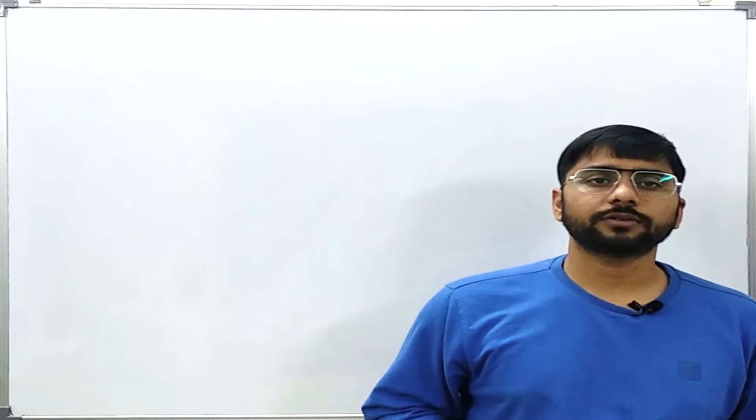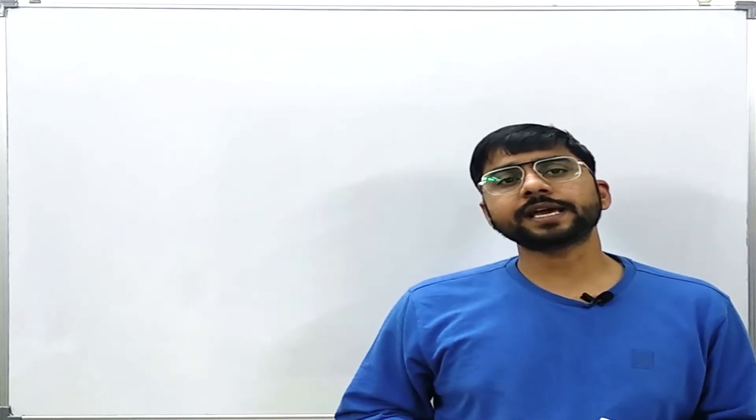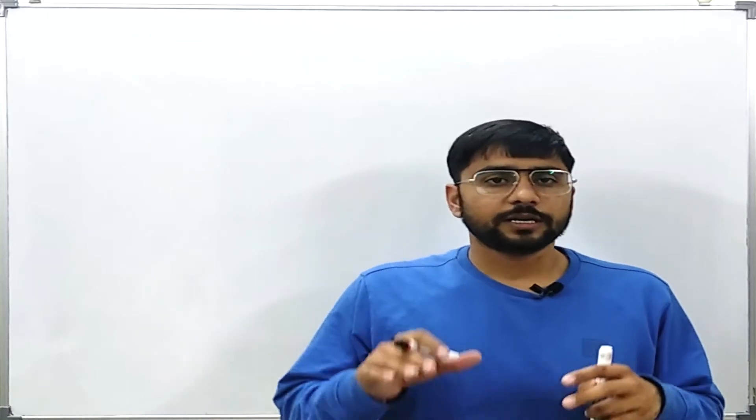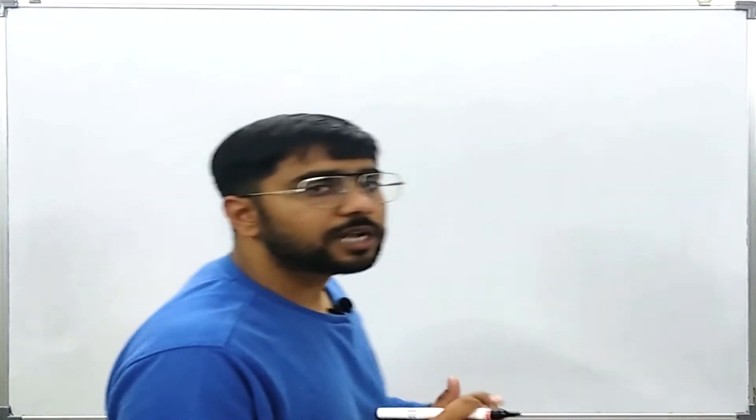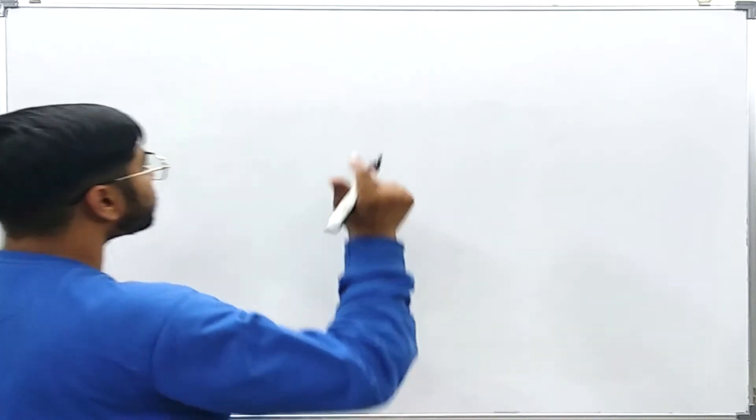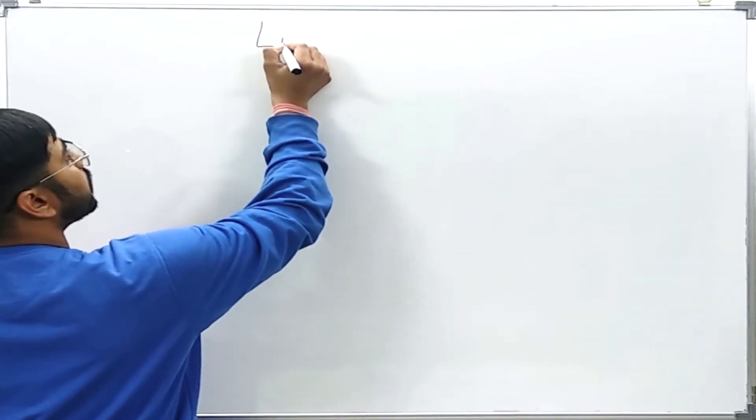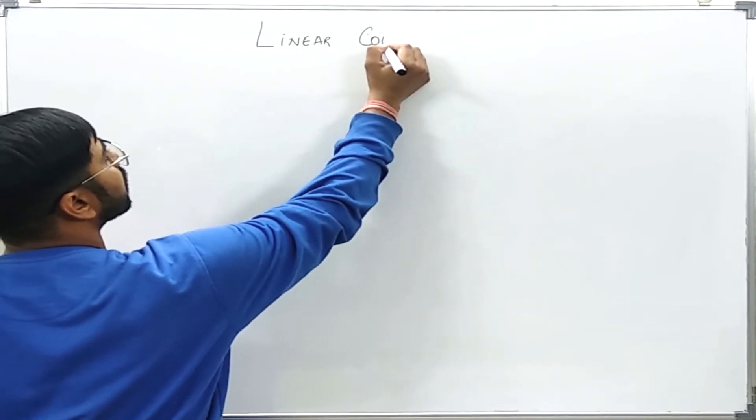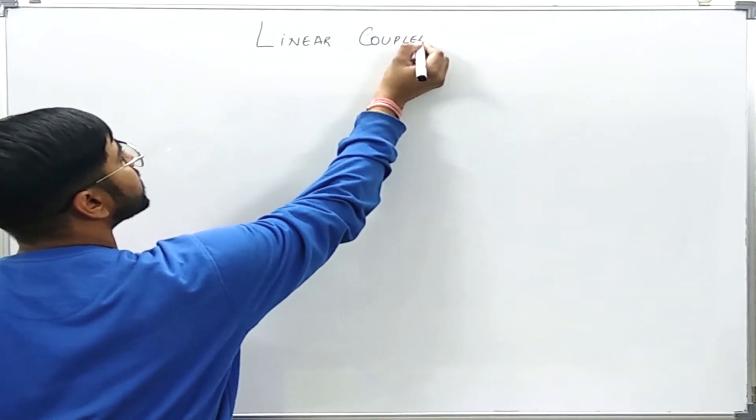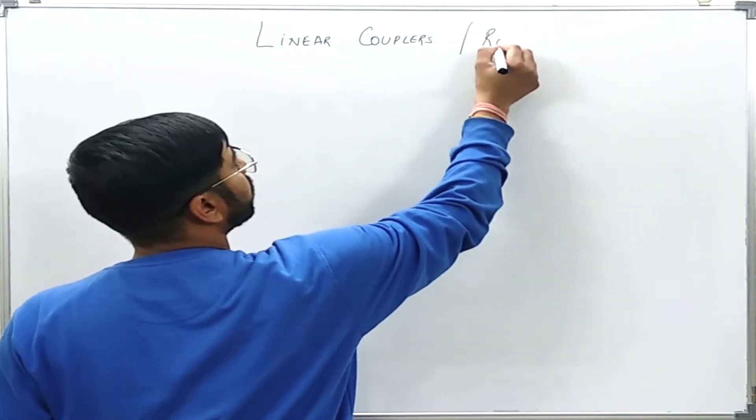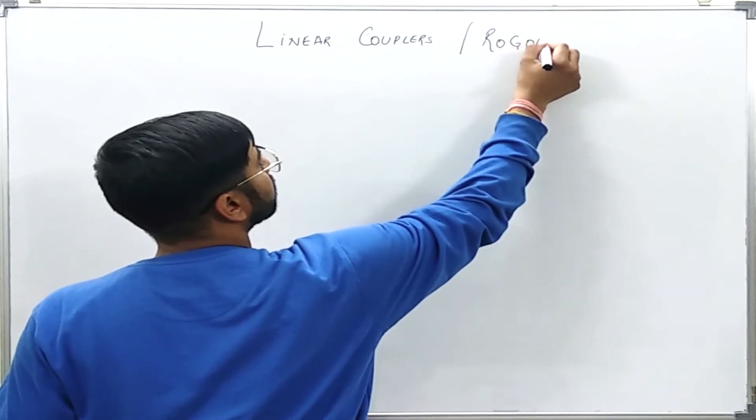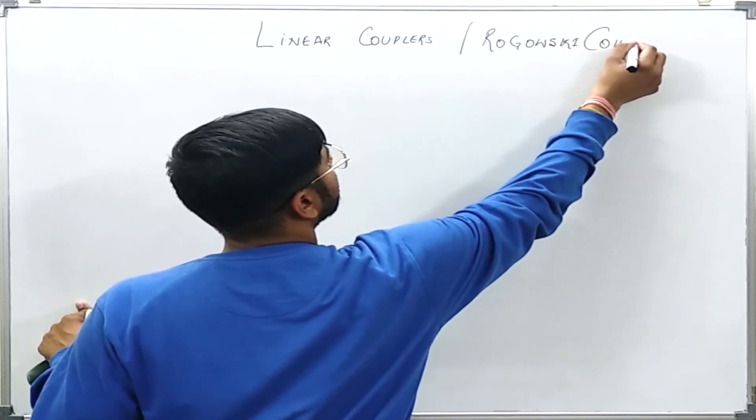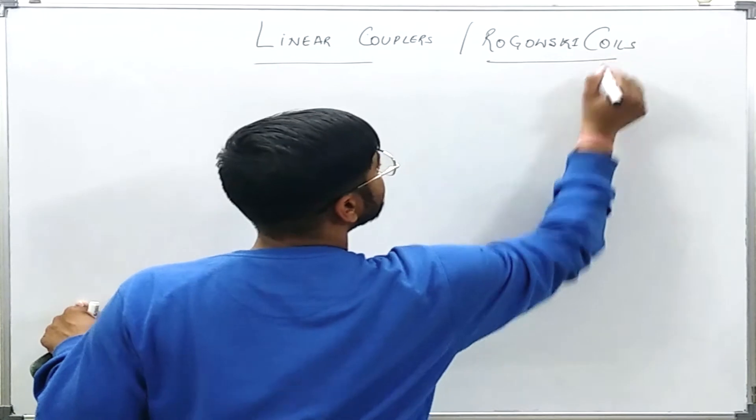What we can do so that the output is linearly all over the region and there is no saturation? There is one solution to it for which we call them linear couplers. Similarly, some Rogowski coils are also functioning on this same principle. What is that principle? Linear couplers and Rogowski coil.